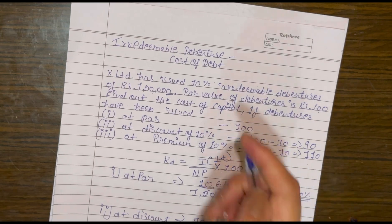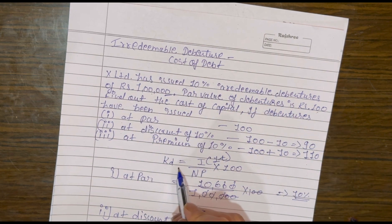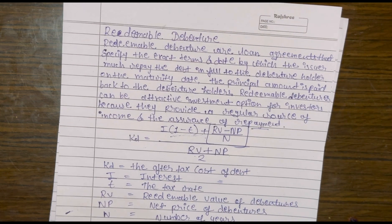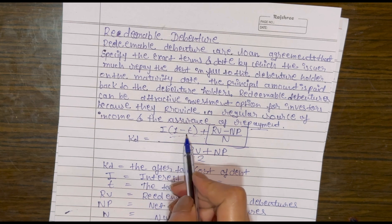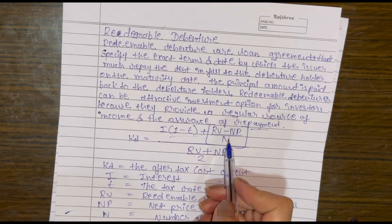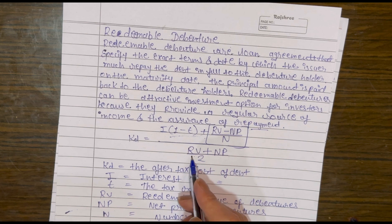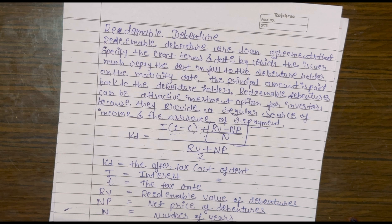इस video में देखा कि cost of debt क्या होता है। Irredeemable debentures के लिए formula: kd = I ÷ NP (tax हो तो × (1−t))। Redeemable debentures के लिए: kd = [I(1−t) + (RV − NP)/n] ÷ [(RV + NP)/2]। Video अच्छा लगे तो like करें, channel subscribe करें और comment करें। किसी topic पर video चाहिए तो comment कर सकते हैं। Thank you!